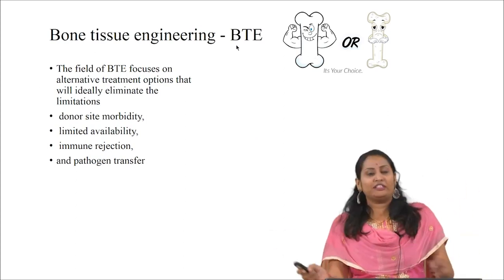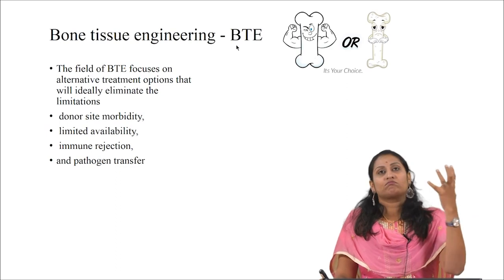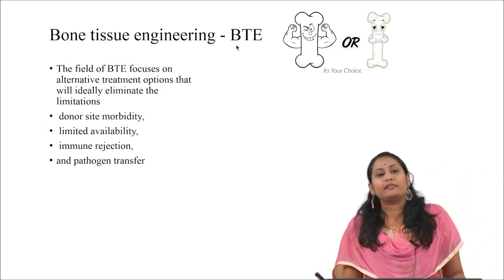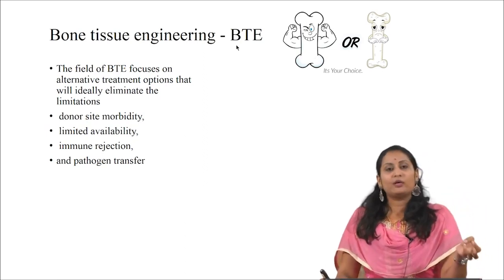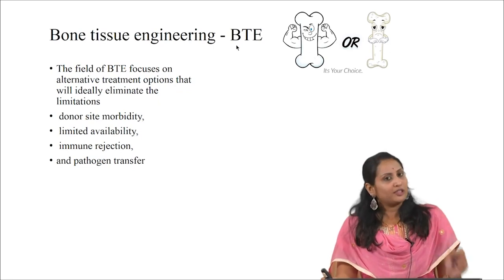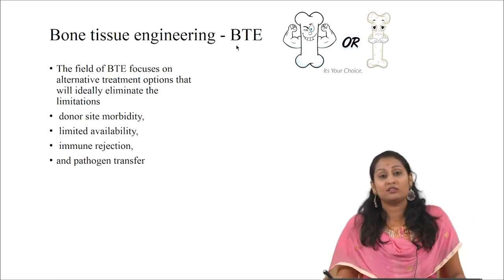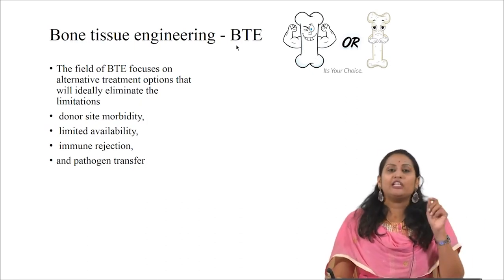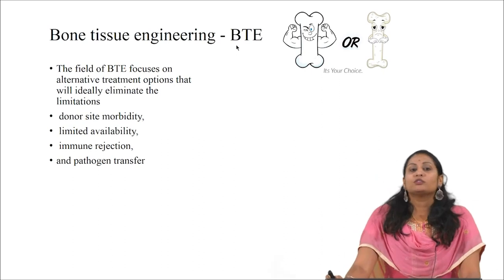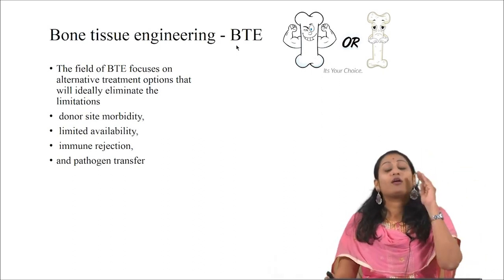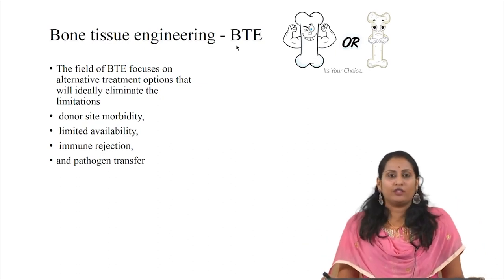What is the need for bone tissue engineering? To overcome the limitations we are facing in current clinical operations like grafting procedures — autograft, where we graft tissues from the same individual, but due to limited availability and donor site morbidity. The second option is allograft, which has the chances of immune rejection and pathogen transfer. In order to overcome all these limitations, we need a bone graft substitute to enhance bone regeneration or to repair bone defects. The field of bone tissue engineering focuses on alternative options that will completely eliminate these limitations facing in current grafting procedures.